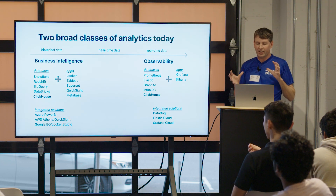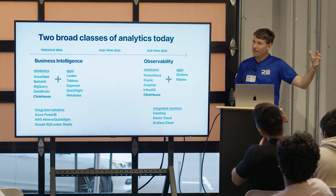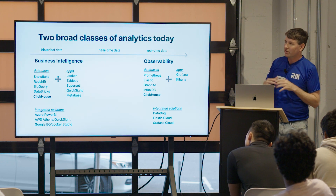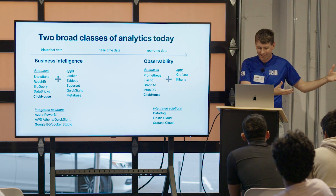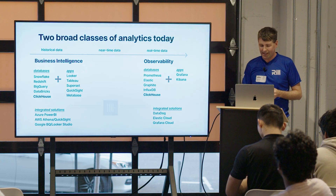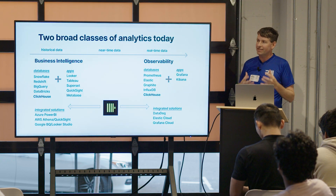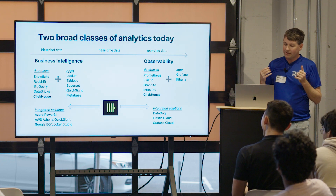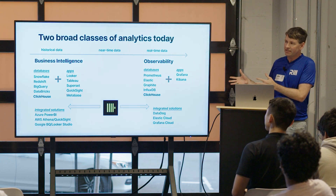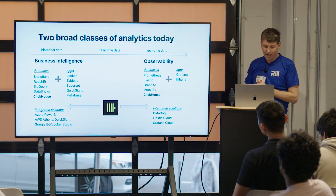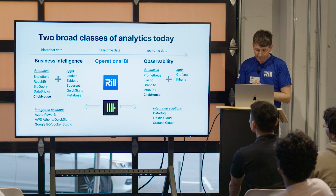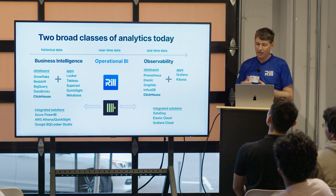I think of operational intelligence as sitting between these two classes. BI typically looks at historical data, usually days-old data. Observability systems are often looking at real-time data. But there's also a place for near-time data — most companies that have humans in the loop looking at data are looking at data that might be minutes to hours old, for intraday decision making by operators. ClickHouse is really the only engine today that spans both BI use cases and observability use cases. Rill is looking to build a BI tool that focuses on this middle space.